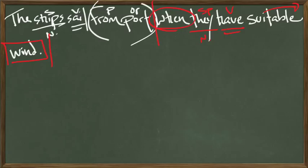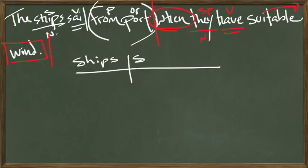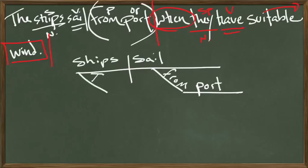That's how we're going to diagram it. So let's diagram this, and then we'll translate it. The ships sail from port when they have suitable wind. We always start with a straight line and divide it. So we have ships sail from port. There's our prepositional phrase there. And we'll add the article adjective. The ships sail from port.